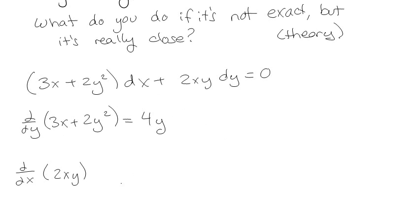If we take ∂/∂y of the first term we get 4y, but on the second term we actually just get 2y. So they're actually close, but not quite exact.